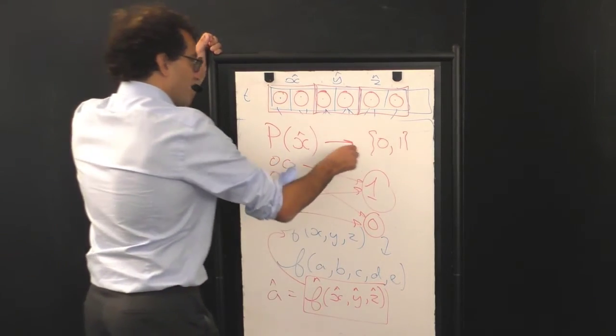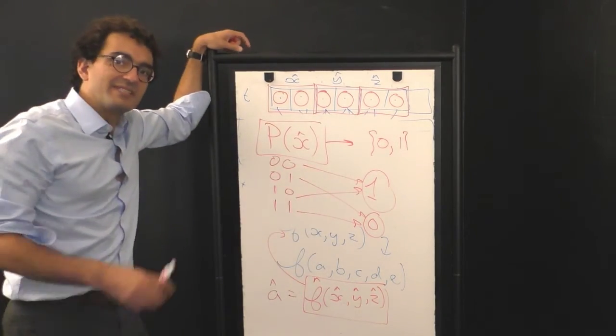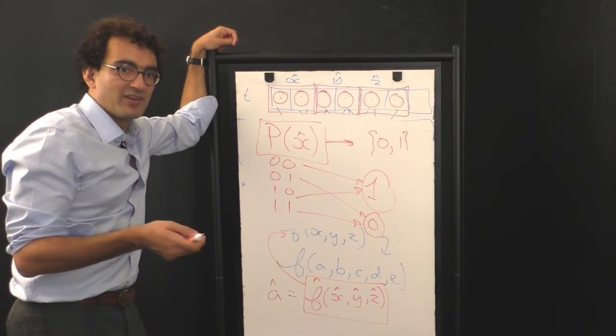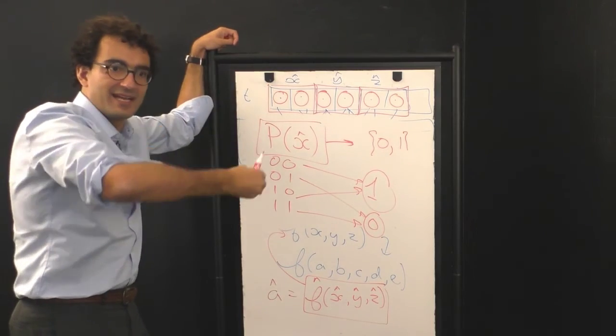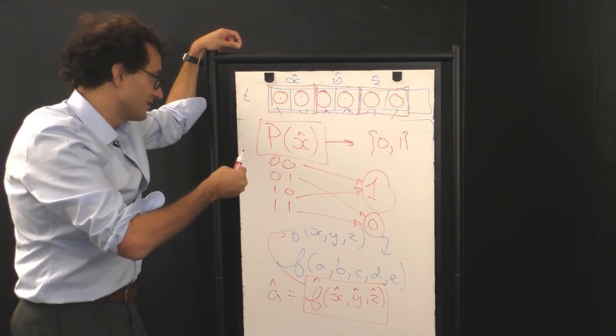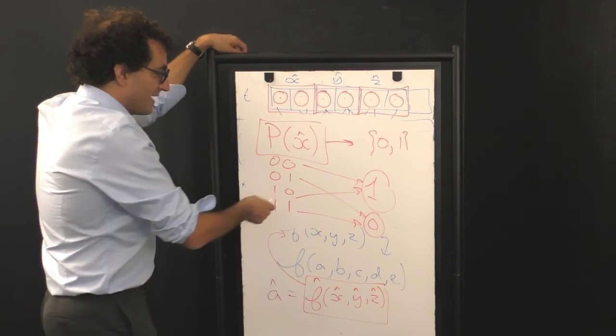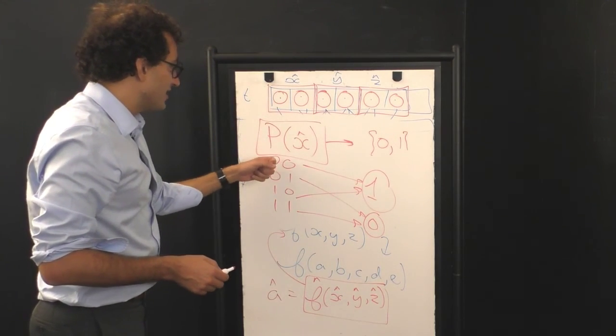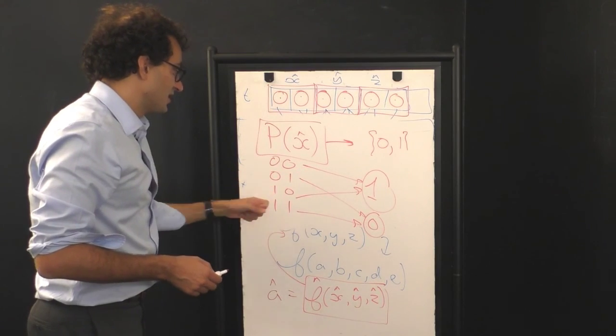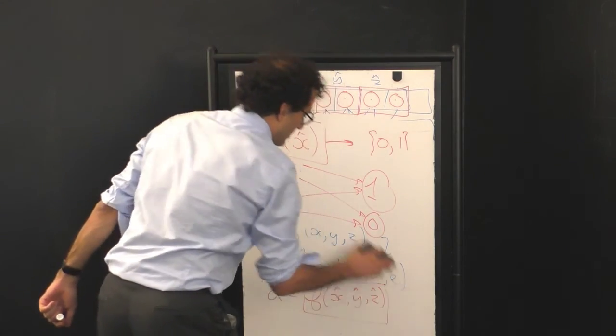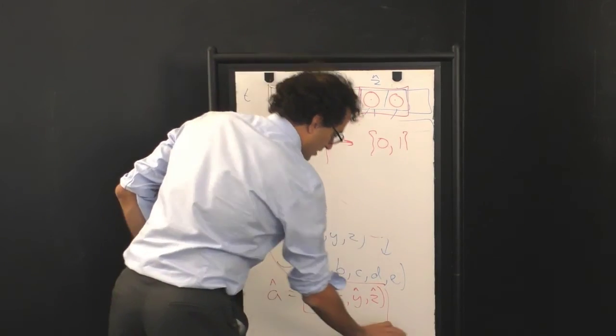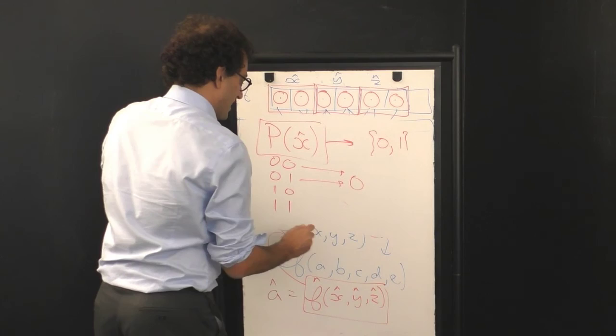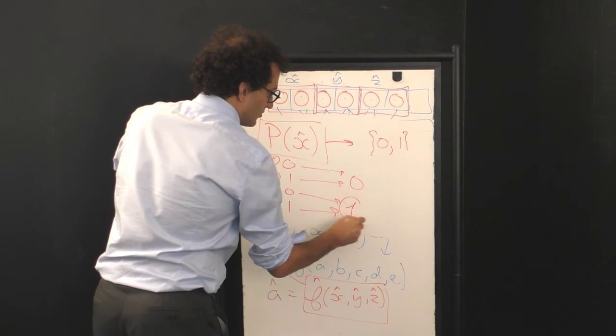You can think of this projection operator here as something very similar to what we did at the introduction to this module altogether, where I showed you how you could coarse grain an image, in that case, the image of Alice and Dinah her kitten. In this case here, for example, we could imagine doing a spatial decimation, where we take only the value of the first entry in the supercell. That kind of spatial decimation would lead to a projection operator, where both of these terms were mapped to zero, and both of these terms were mapped to one.